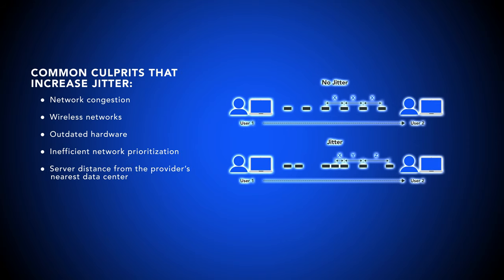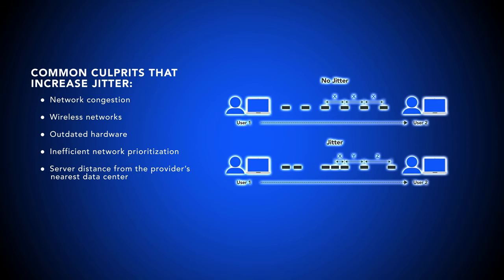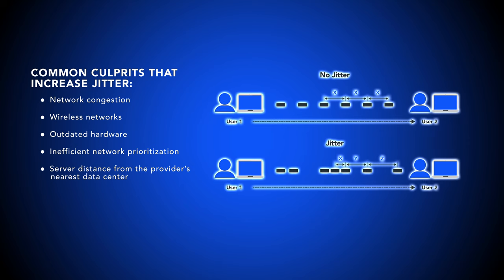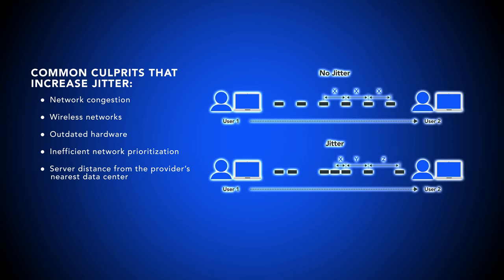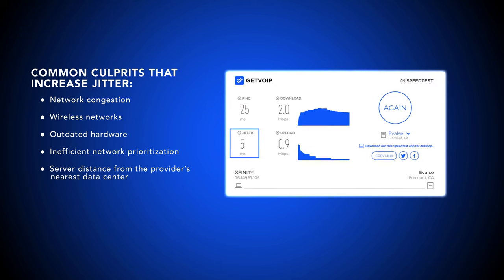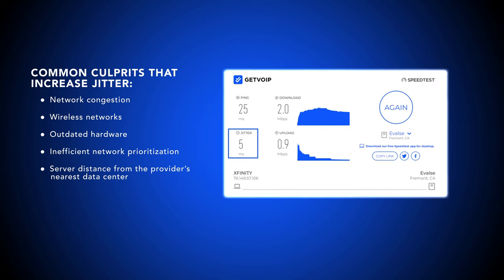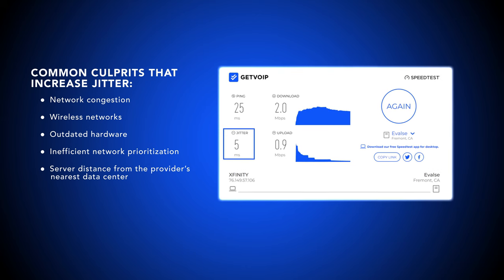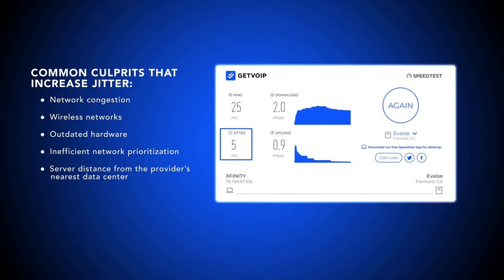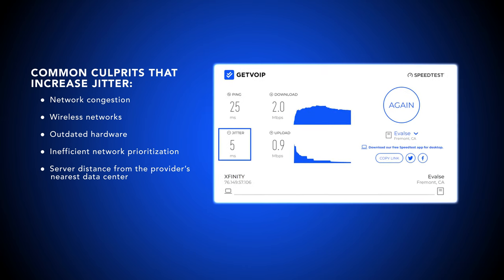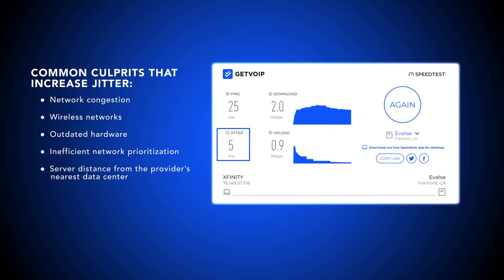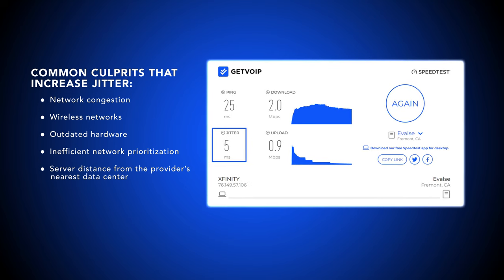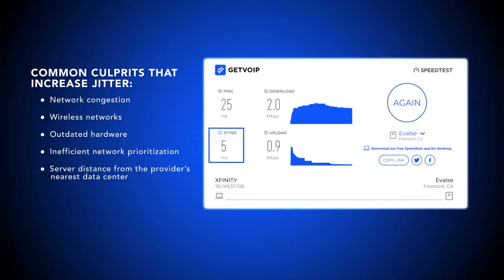Since jitter usually stems from increased network latency, the things that increase latency are the same culprits that increase jitter. Online tests, like the one provided in the article in the description box below, can reliably measure your jitter in under a minute. On VoIP calls, the acceptable latency is below 150 milliseconds, and the acceptable jitter is below 30 milliseconds.